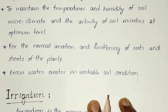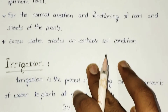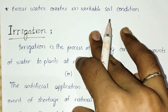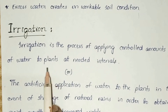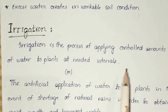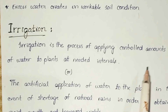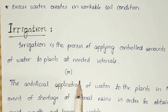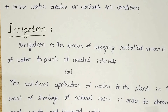Irrigation is the process of applying controlled amounts of water to plants at needed intervals. Otherwise, it is the artificial application of water to plants in the event of shortage of natural rains, in order to obtain rapid growth and increased yields.